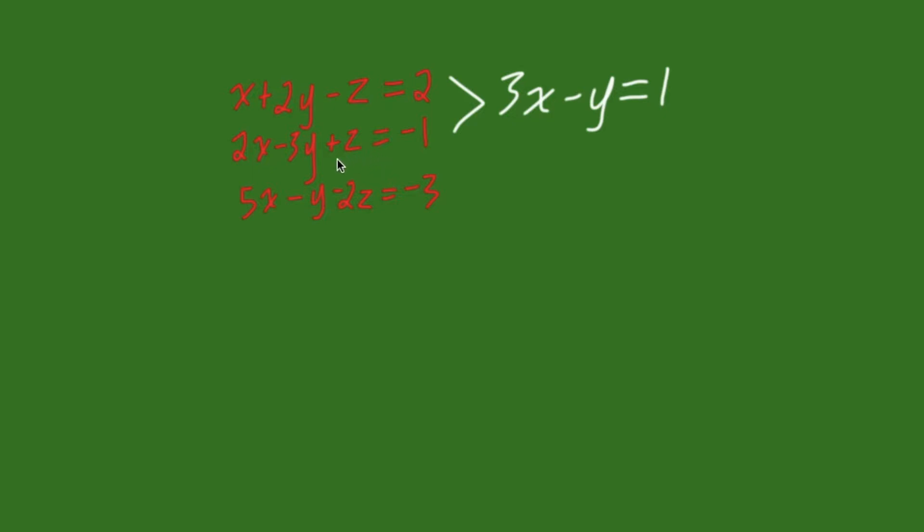So, this is a bit hard because we have z and we have negative 2z. So, let's make this z a 2 so we can easily add these together to eliminate z. To do that, multiply all of this equation by 2. That gives us the updated equation 2 to be 4x minus 6y plus 2z equals minus 2.